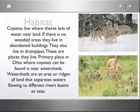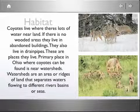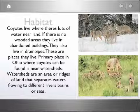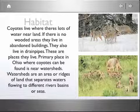Coyotes, by Jacob. Habitat: Coyotes live where there is lots of water near land. If there are no wooded areas, they live in abandoned buildings. They also live in drain pipes. Primary places in Ohio where coyotes can be found is near watersheds. Watersheds are an area or range of land that separates waters flowing to different rivers, basins, or seas.